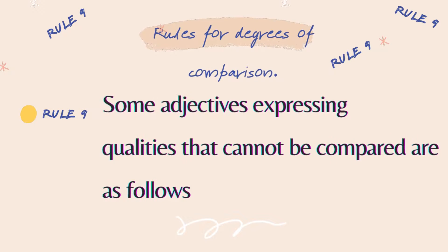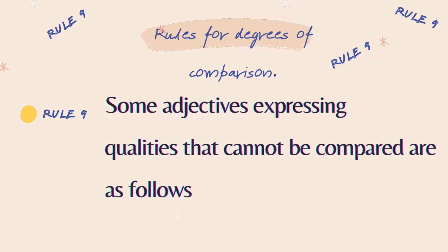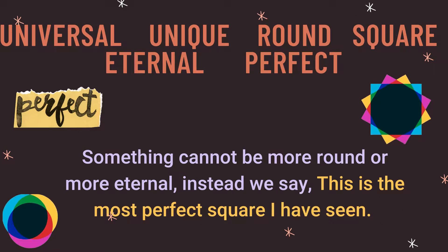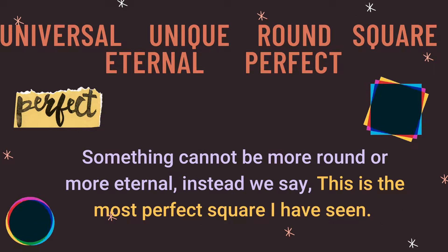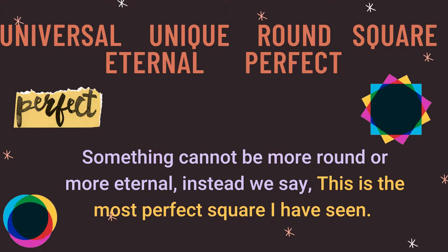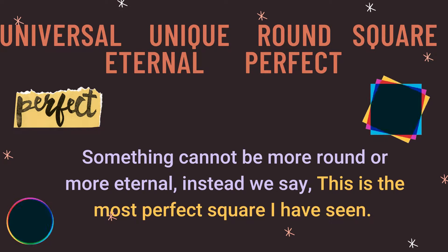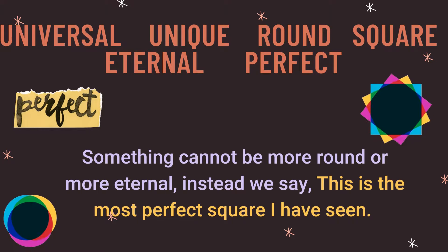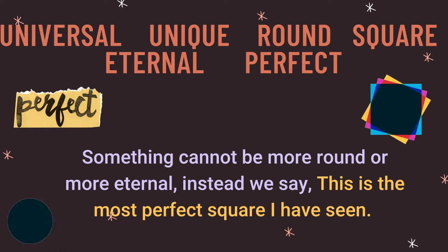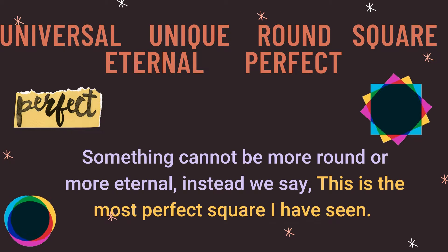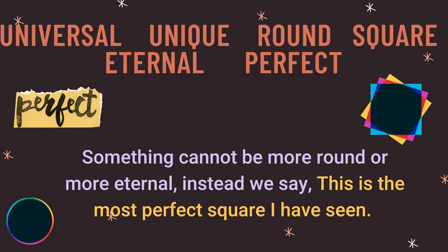Rule number 9 is for adjectives expressing qualities that cannot be compared at all. Words like universal, unique, round, square, eternal, and perfect cannot be compared. For example, you cannot say 'more round' or 'more eternal'. However, you can say 'This is the most perfect square I have seen.'